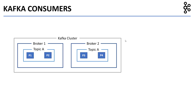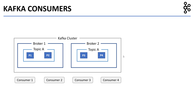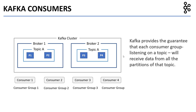Let's look at this example of a Kafka cluster which has two brokers, broker 1 and broker 2. It also has a topic, topic A, with four partitions P1, P2, P3, and P4. Let's say we have four consumers each listening on topic A. Consumers logically belong to a consumer group, but if you do not specify a consumer group, a unique consumer group is assigned to the consumer. So each consumer will have its own consumer group: consumer 1 in group 1, consumer 2 in group 2, consumer 3 in group 3, and consumer 4 in group 4. Kafka guarantees that each consumer group listening on a topic will receive data from all the partitions of that topic.